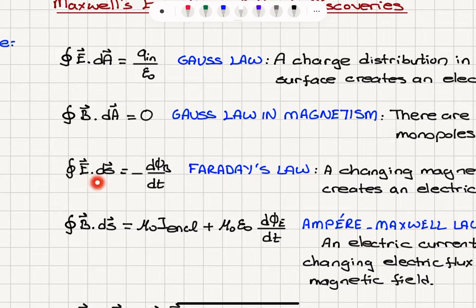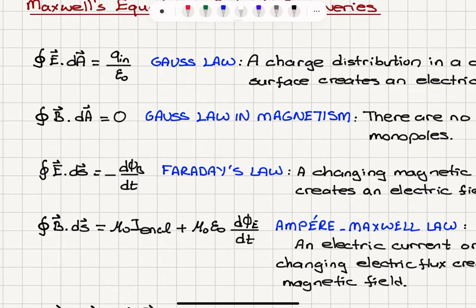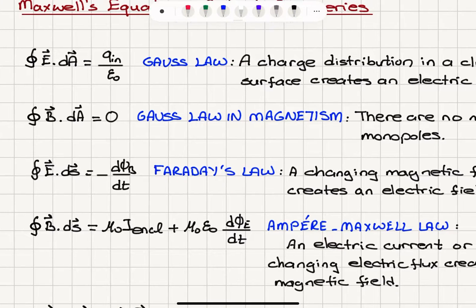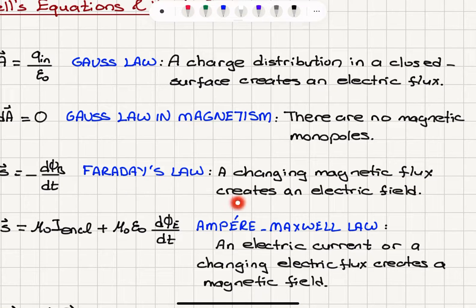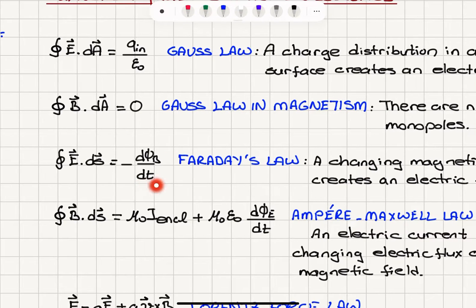The path integral E dot dS at the boundary of a closed surface is equal to minus the rate of change of magnetic flux. This is known as Faraday's law. A change in magnetic flux creates an electric field — when we have a change in magnetic flux, there is an induced electric field by this changing flux.